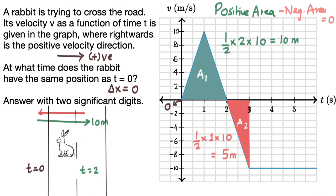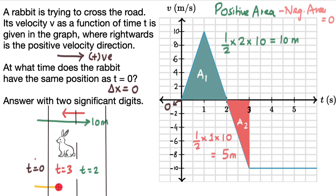So at this instant, time equals 3 seconds. Till now, the displacement delta x is not equal to zero because the rabbit is not at its original position. It must travel some more distance. It has traveled positive 10 and negative 5, so right now it is at a positive displacement of 5 meters. It has to travel back 5 meters more. We only want to know when it has traveled an extra 5 meters to the left — an extra negative displacement of 5 — so that the net displacement again becomes equal to zero.